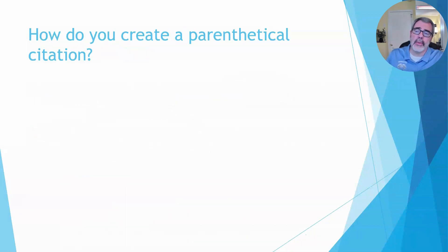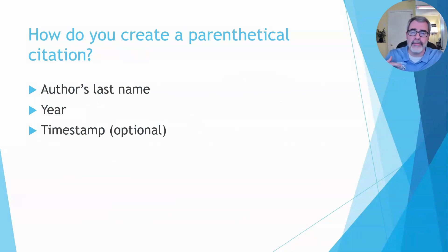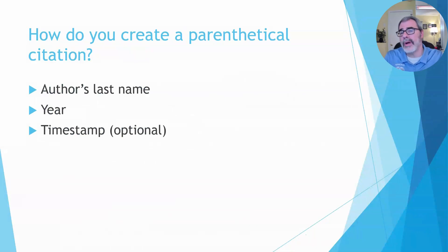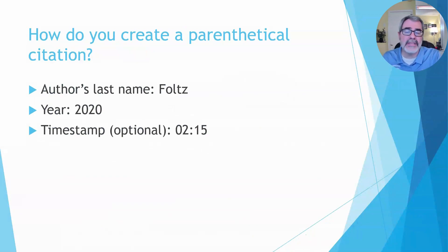Our next question is how do we create a parenthetical citation? Just like with creating a reference entry, you need to gather information. There are two mandatory pieces and one optional piece — a timestamp. You need the author's last name, you need the year, and then optionally the timestamp. I always recommend including it because the more information you give to the reader the better. In our case it's going to be Fultz 2020, and our timestamp is at the two minute and 15 second mark.